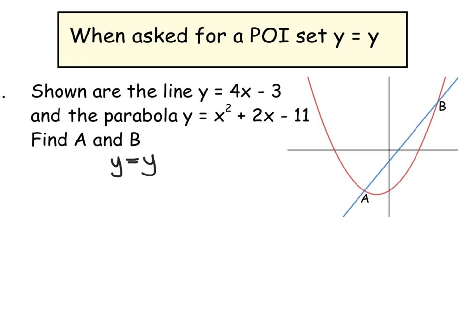So let's write this out. We're going to put the x squared plus 2x minus 11 equal to 4x minus 3. And then we're going to move everything to the left-hand side like Beyonce. So this will become 2 take away 4, so minus 2x, and this will become a plus 3.